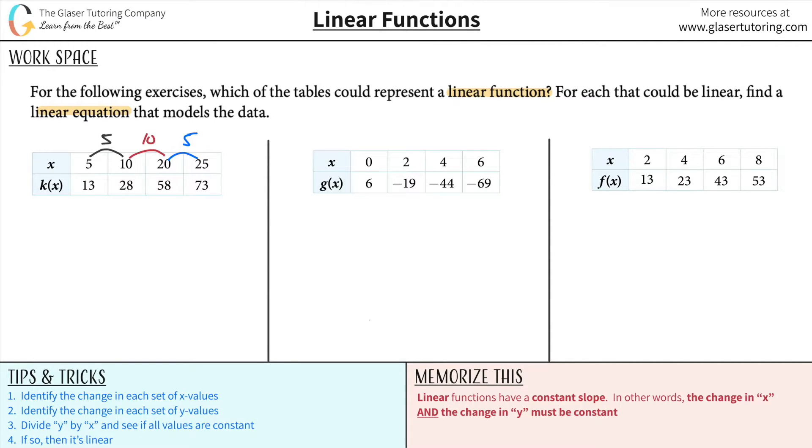The change here to go from 5 to 10, we had to increase by 5. The second one is going to be to go from 10 to 20, we went up by 10. And then 20 to 25, we had to increase by 5. Similarly, we're going to do the same thing now for the y value. The change here is 28 minus 13, which is 15. Then 58 minus 28 was 30. And 73 minus 58 is 15.